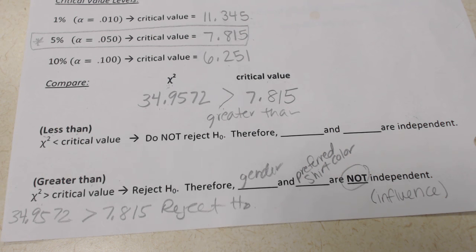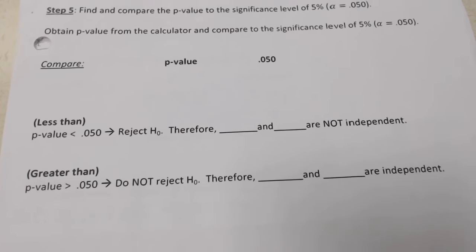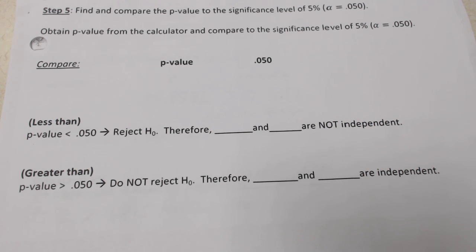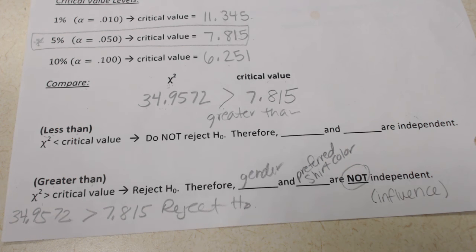This is how you carry out a chi-squared test by hand. We are going to learn how to use the calculator, which is step five on your packet, but that is a different lesson with a different video. So this has been the chi-square test — hopefully it helped. Thank you.